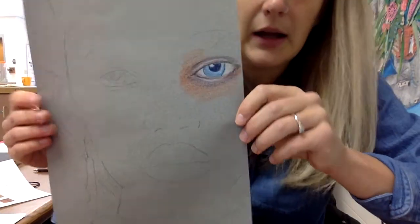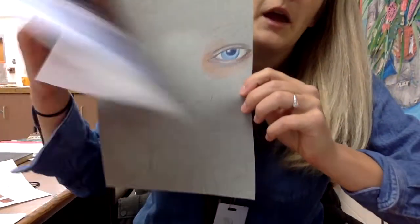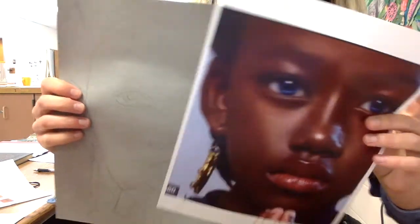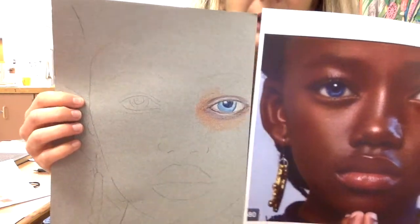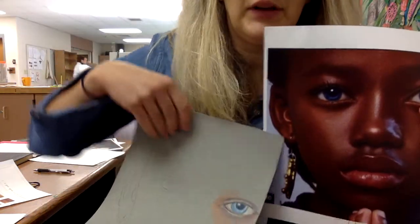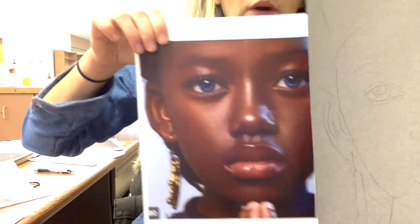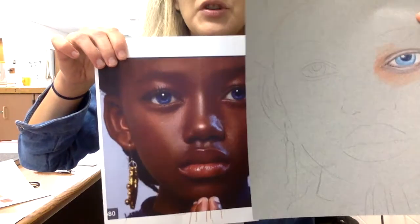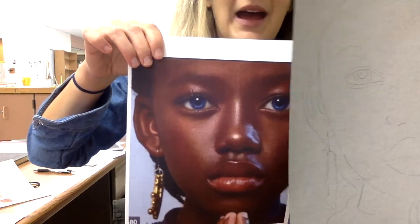Alright, so I'm going to start to show you the skin tones and areas around the eye. And again, you're going to work out from here, highlighting where it's highlighted, you leave it light and white, darkening where it's darkened, shadowing where it's shadowed. Just continue to match.